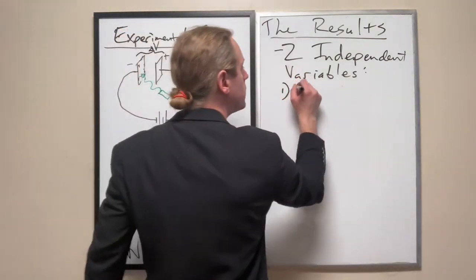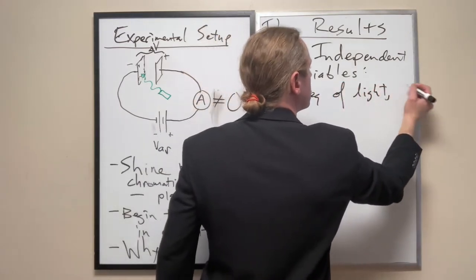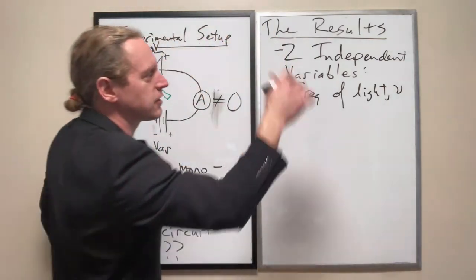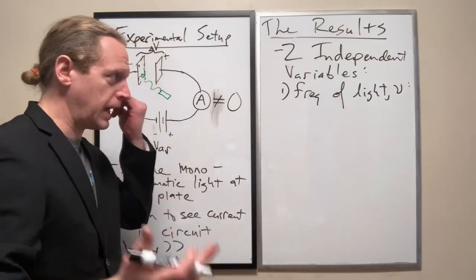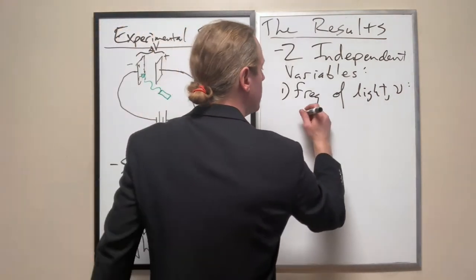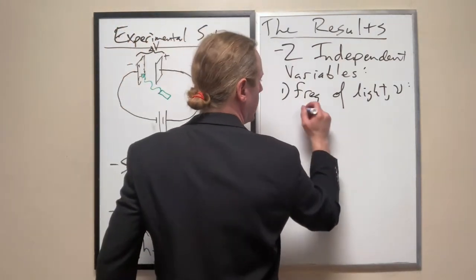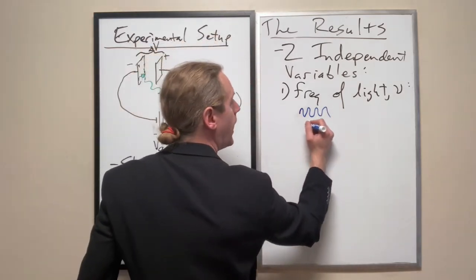So the frequency, nu, and that's how we write it. It's kind of like a V that's a little bit drunk and wobbly, but it is in fact both pronounced and written nu. And so remember, if you have short wavelength light, which is blue light, you have a high frequency.